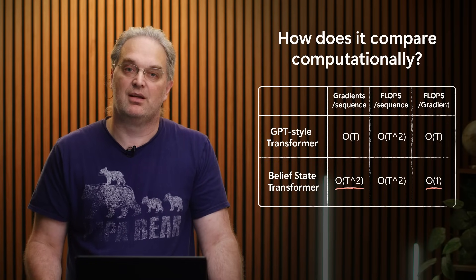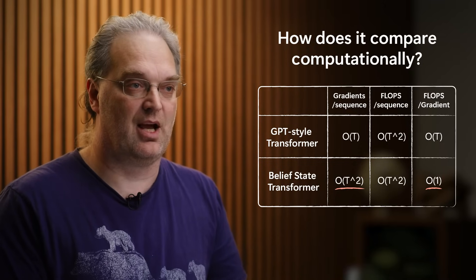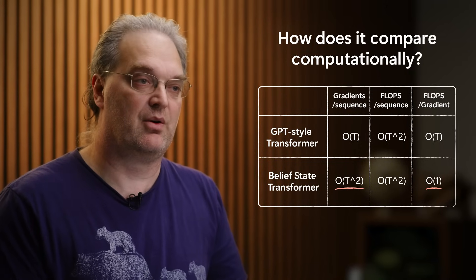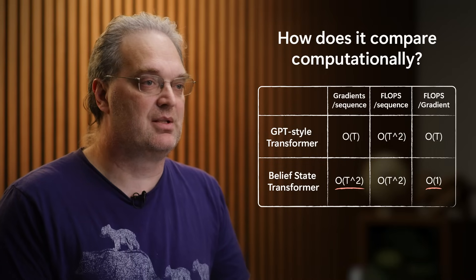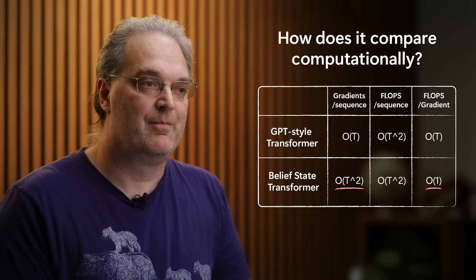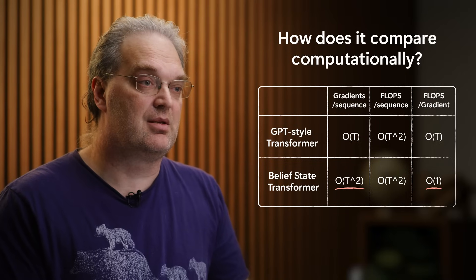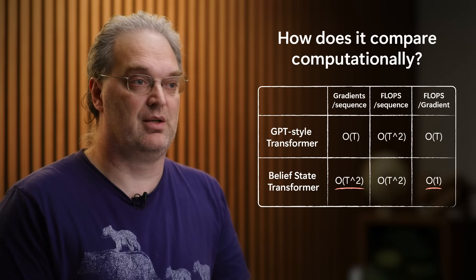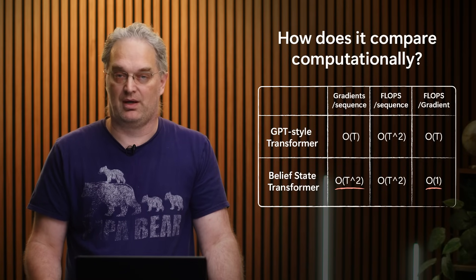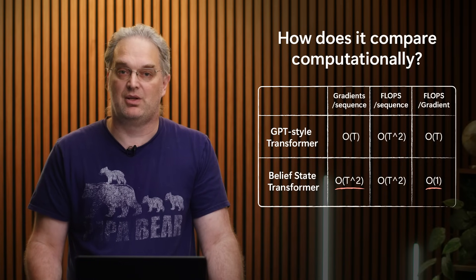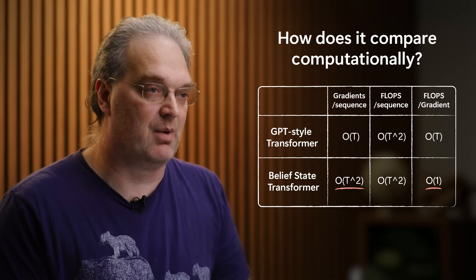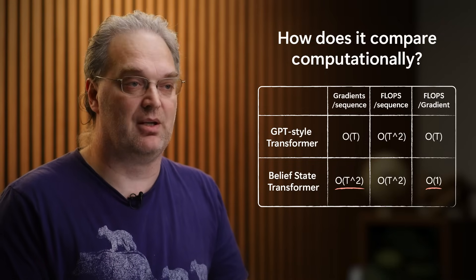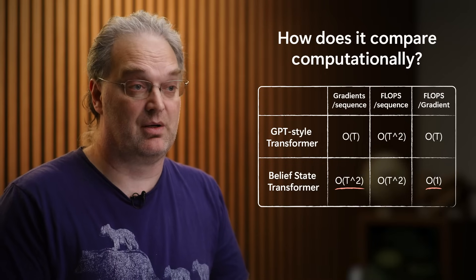In addition, you pay because the number of times you evaluate the output head is O(n²), since there are O(n²) prefix-suffix pairs. So there's a constant factor increase in computation, which is problematic but not the end of the world — you can subsample. What you get in return is O(n²) gradients rather than O(n) gradients. In a standard GPT-style transformer you only have O(n) gradients, one per symbol, but here you get O(n²) gradients, meaning many more ways to extract information from a sequence, which unlocks the possibility of learning things that were previously unlearnable.